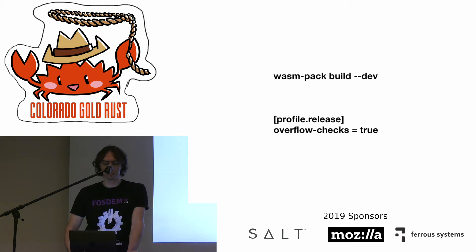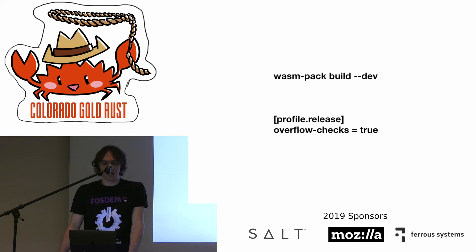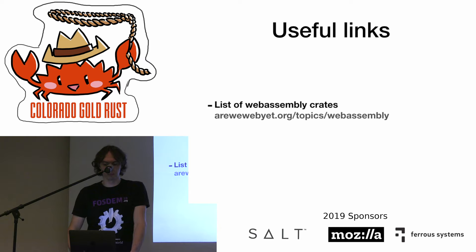And one other issue: overflow checks. Usually when we build in debug mode and encounter an overflow, the program will panic. But in release builds, there are no overflow checks by default, so it may represent a hidden bug. The problem is that when you use a release build without any flags, you may have hidden overflow bugs. To avoid them, it's required to build with a debug flag or to enable overflow-checks = true in the release profile.